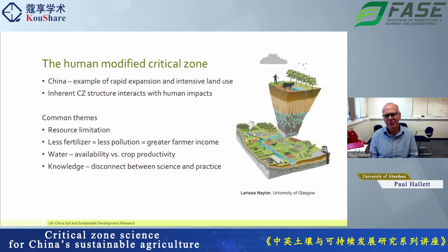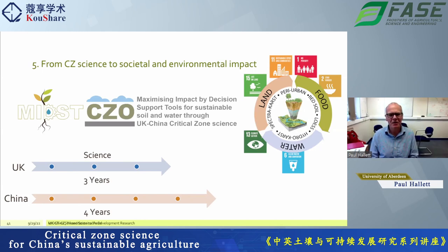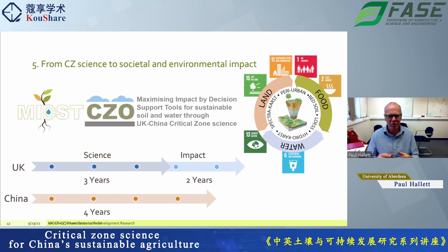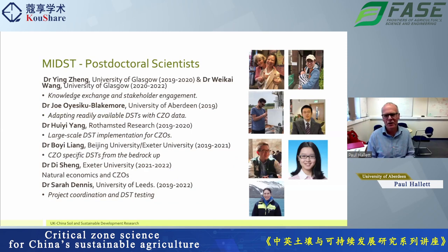This brought us to the next phase of the project. In the original projects, China had four years of funding and the UK had three. We had follow-on funding to take the science and try to put it into impact — to help address the disconnect between what we're getting in this in-depth science and what farmers may need. Currently in China there are also follow-on projects running looking at these critical zone processes in much greater depth. We had a project called MIXT funded, employing a range of new postdoctoral scientists bringing in new expertise.